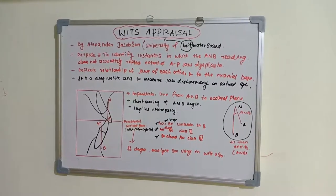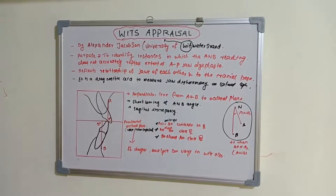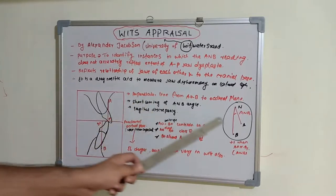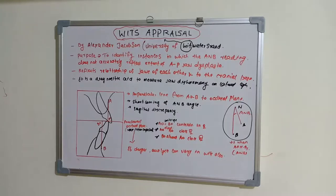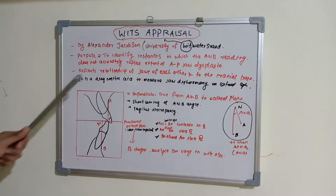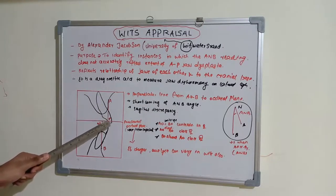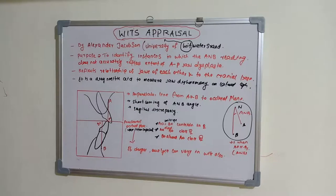Instead of taking an angular measurement as in the ANB angle, the Wits appraisal uses a linear measurement — the difference between AO and BO. Since there is a lot of discrepancy possible with the ANB angle due to skeletal parameters, we use this linear dental parameter to describe the anterior-posterior jaw harmony. It is not affected by the skeletal parameters in the same way.